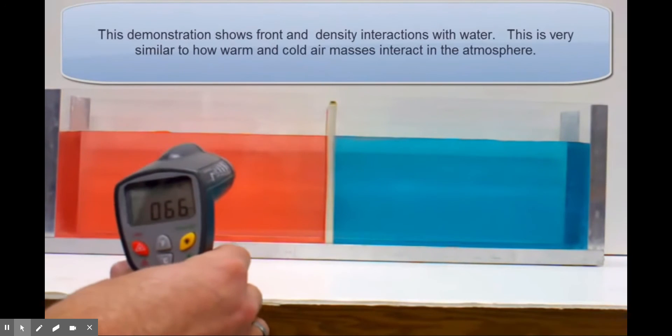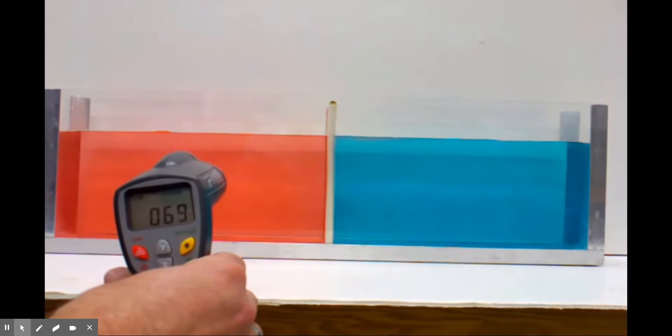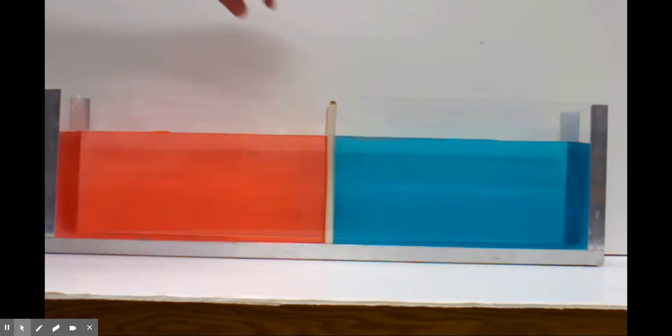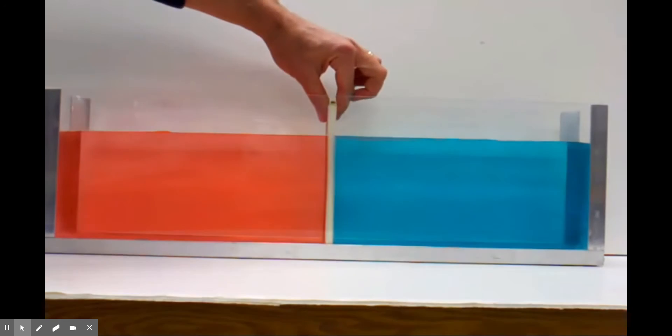And when they shine the infrared thermometer on the red side, it's about 69 degrees Fahrenheit. It's only 3 degrees different, but it makes a drastic difference when they're interacting.